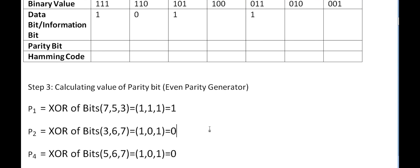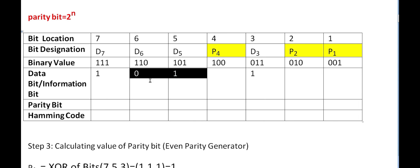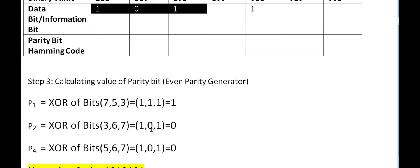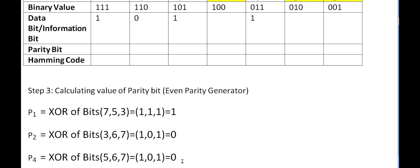For P4, we look at the MSB (bit 2) of each position's binary equivalent. Positions having 1 in the MSB are: 5 (101), 6 (110), and 7 (111). So we XOR bits at positions 5, 6, and 7. The values are: position 5 has 1, position 6 has 0, position 7 has 1. That is 1, 0, 1 — two 1's, an even count — so P4 generates 0. Therefore P1 = 1, P2 = 0, P4 = 0.